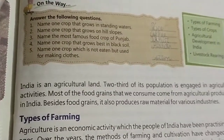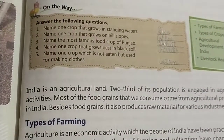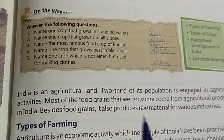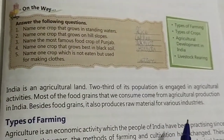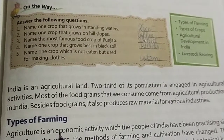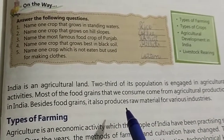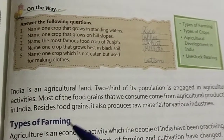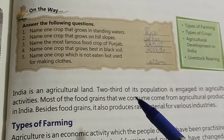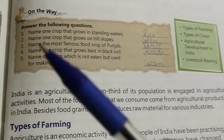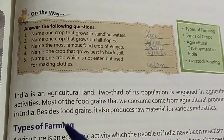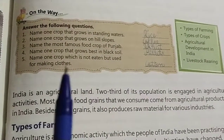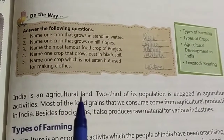India is an agricultural land. Two-thirds of its population is engaged in agriculture activity. Most of the food grains we consume come from agricultural production. Besides wheat and rice, agriculture also produces the raw material for various industries.